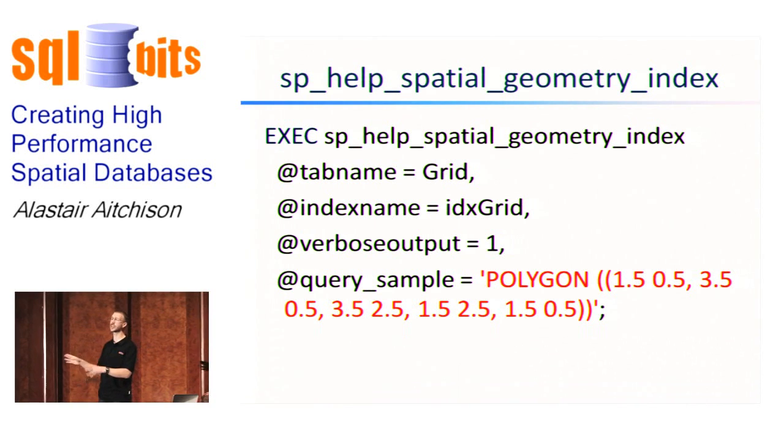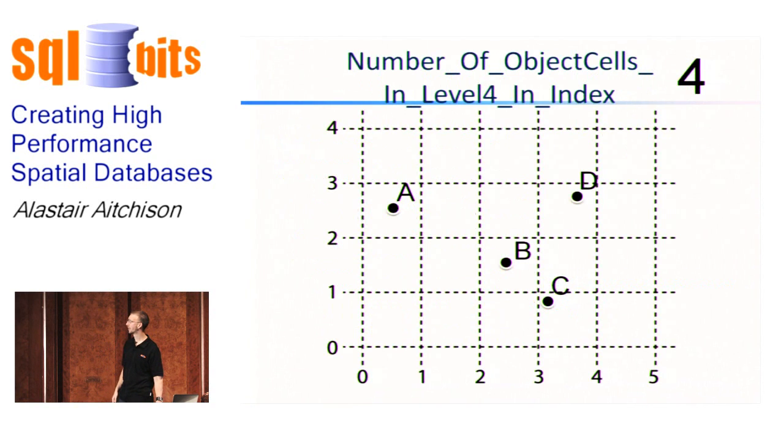You get lots of data from this stored procedure, a couple hundred lines of interesting information. We're just going to step through some of the important ones. The first one: number of object cells in level four in index four. Well, that's not particularly surprising. Our table contains four points. Each one of them lies in its own level four cell. So we've got four level four cells in the index. There they are.